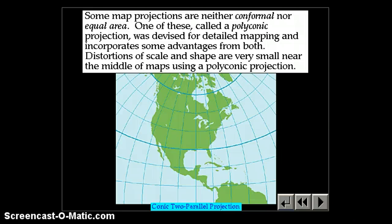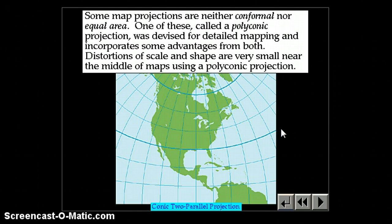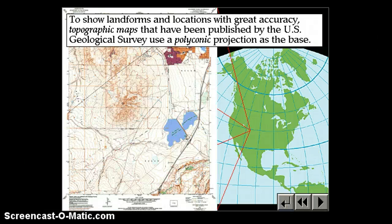Some maps are a combination of conformal and equal area — they don't do either thing perfectly, but they minimize distortion in both fields. These are called polyconic projections. To show landforms and locations with great accuracy, topographic maps published by the U.S. Geological Survey use polyconic projections as the base, giving the minimum amount of distortion possible.